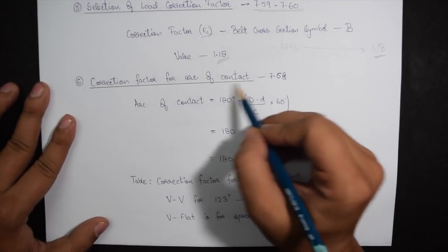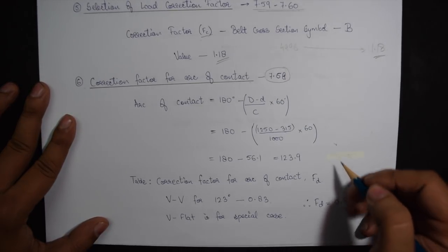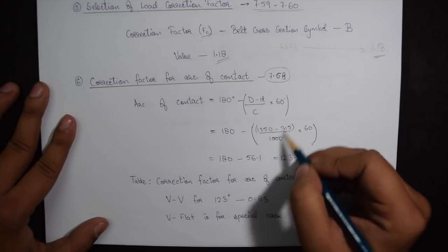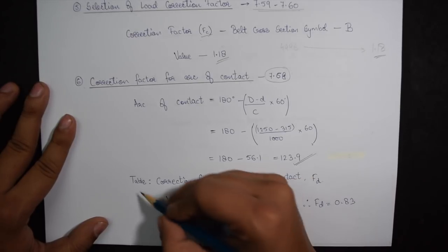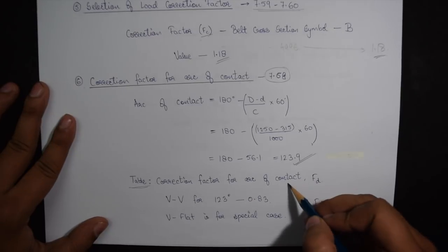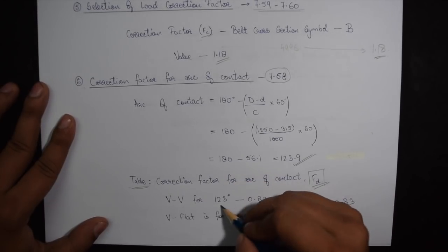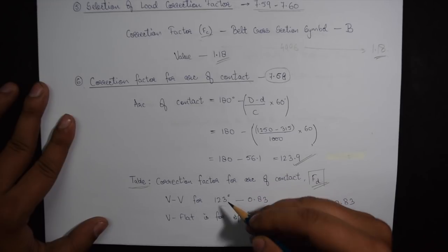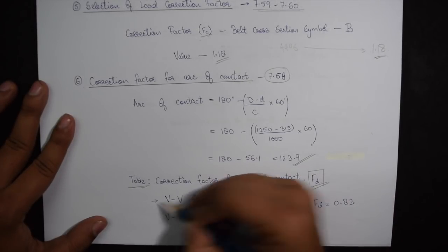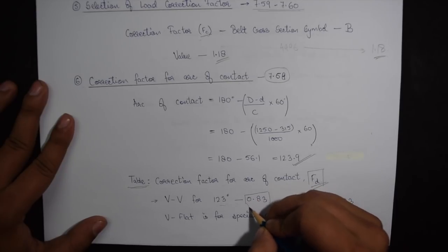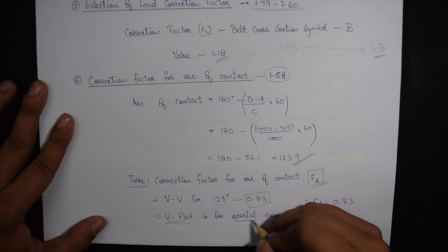Step 6 is the correction factor for arc of contact given on page 7.68. The formula which is given contains capital D, small d and c. All of these three are known to us. Calculating this we get the value as 123.9. Right under the formula we have another table for correction factor for arc of contact FD. Looking in this table we see that 123 is given to us. So we will be choosing 123 because 127 is very high. So correction factor for VV is 0.83. Now if in the question it is given about V flat then only we will be going into that column otherwise V is what we will be choosing.